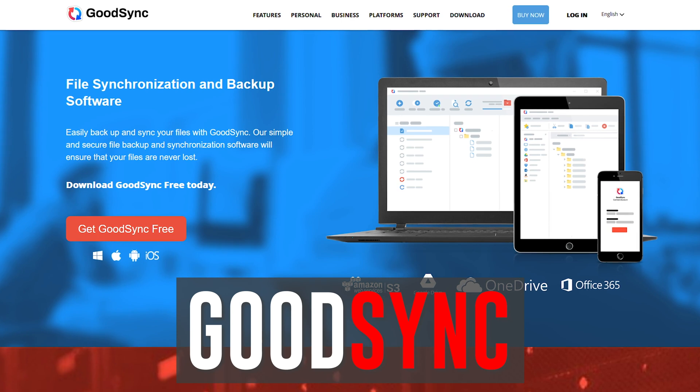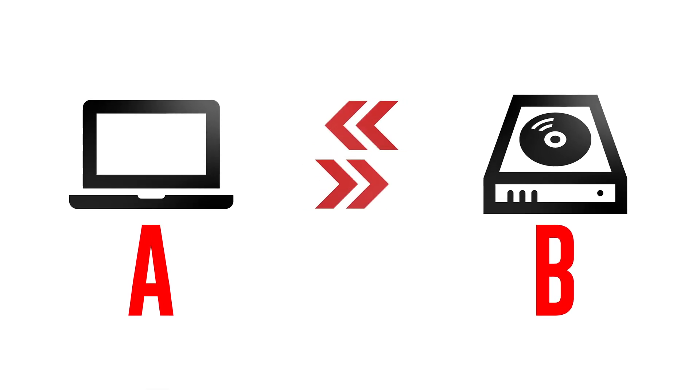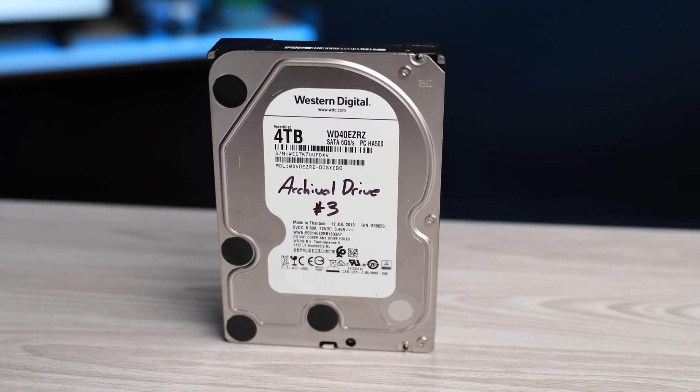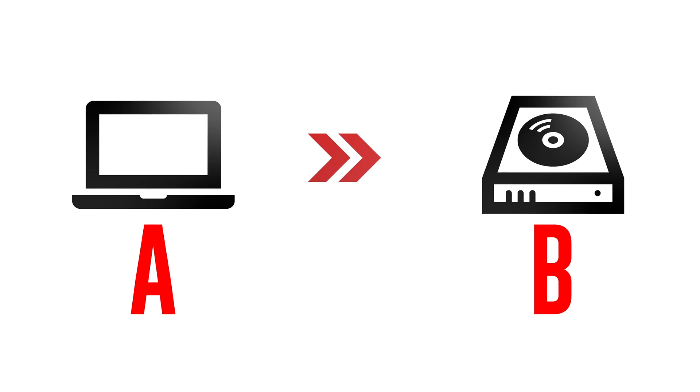The third program you need is called GoodSync. GoodSync is a file synchronization and backup software that is single-handedly the reason why I have never lost a single picture or video file in my career. It works by letting you create jobs that automatically trigger whenever you want. You choose directory A and directory B, and select whether to go A to B, B to A, or synchronize them so the most recent files are preserved. For example, if you have an external hard drive for backup but can never remember to do it consistently, just set GoodSync to automatically move new files to that drive for you.